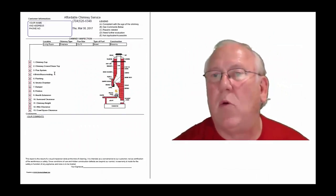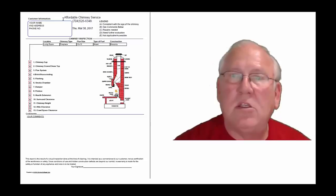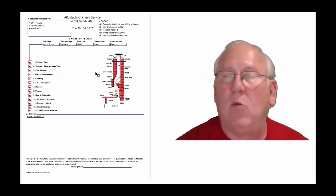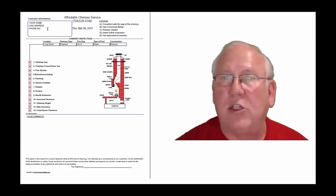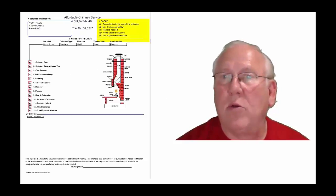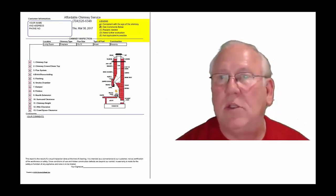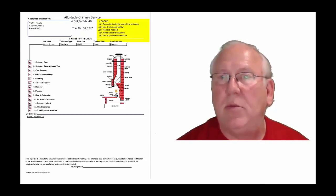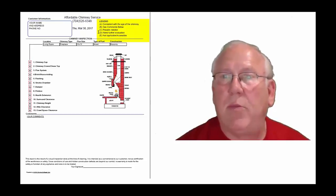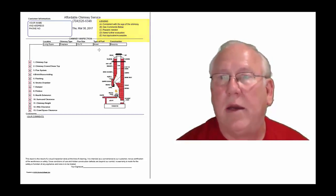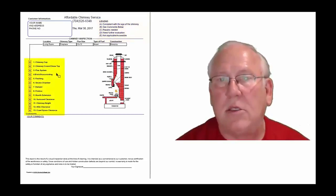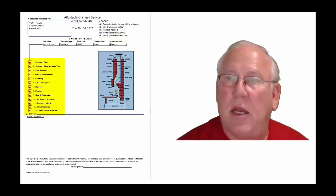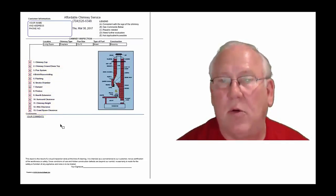Now let's take a look at the inspection report and see how it reads out. This is a generic report — this is exactly what you will get, only your information will be filled into all these blanks. The upper right-hand corner of the report is the legend. Each one of these initials pertains to something: A is consistent with the age of the chimney, B see comments below, C repairs needed, D need further evaluation, or E not applicable. They're placed into the boxes next to the parts of the chimney that can be easily identified in this diagram. And you'll find my comments here below.